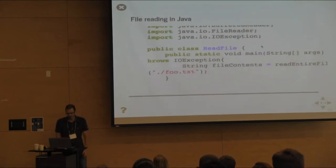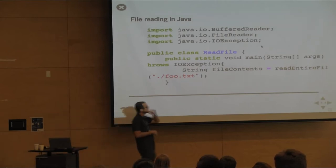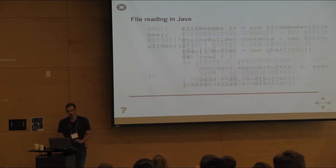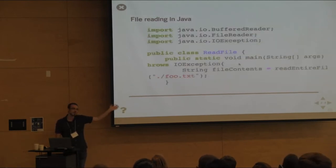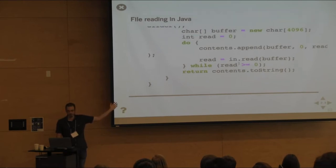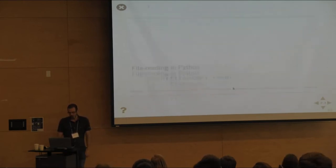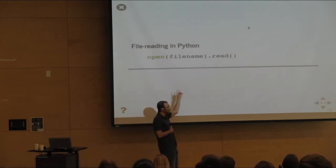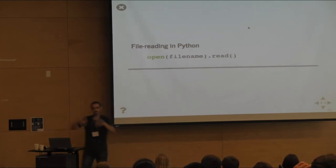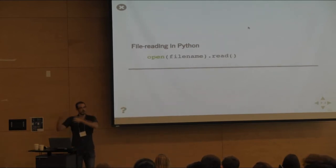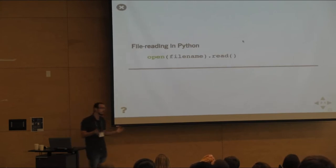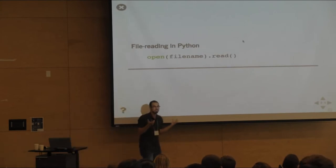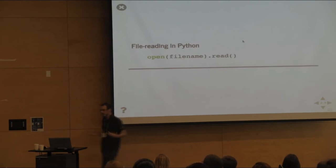As a classic example: this is how you read a file into memory in Java — you have all this code. But in Python, you just open the file and read. Python is still doing all that work — creating a buffer, grabbing blocks from the file — but it's doing it for you. If you really want to, you can write it more verbosely, but you don't have to by default.